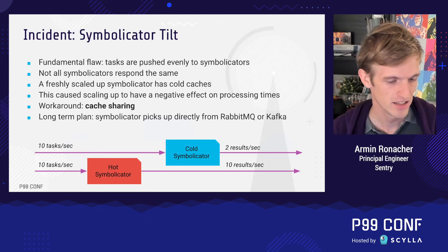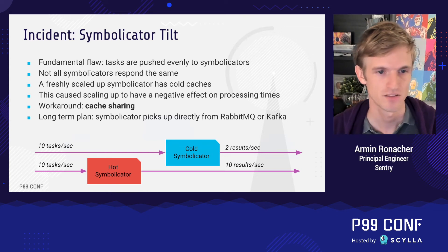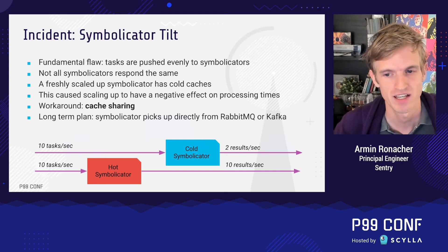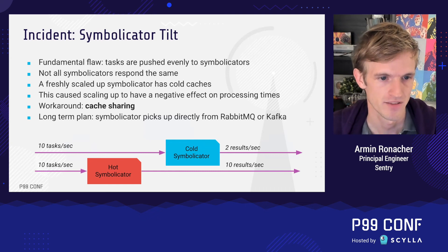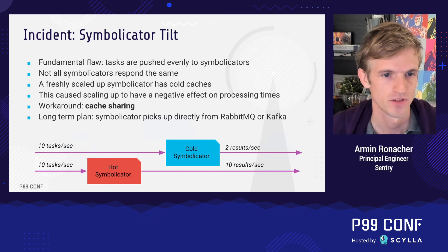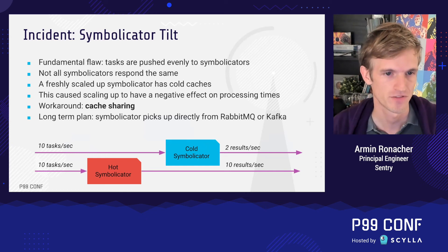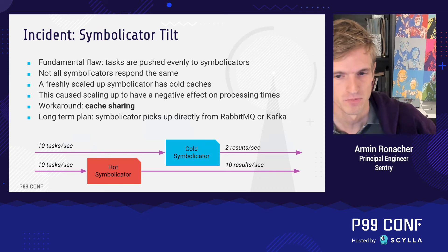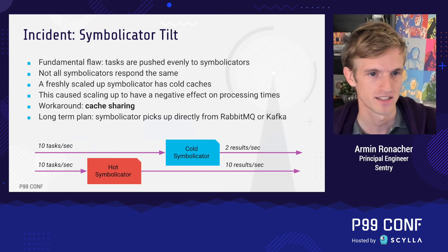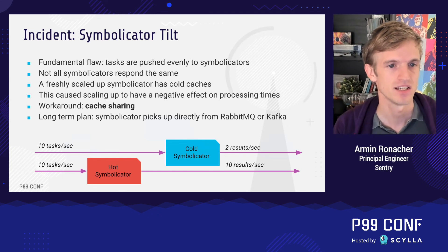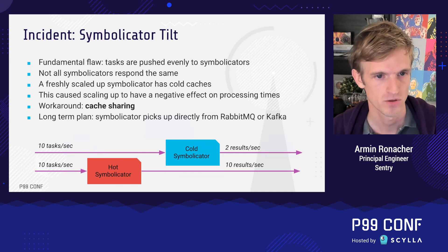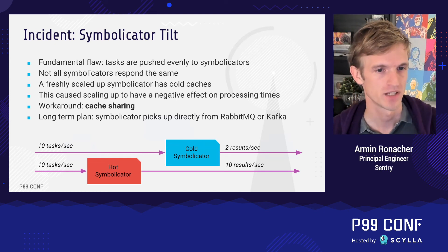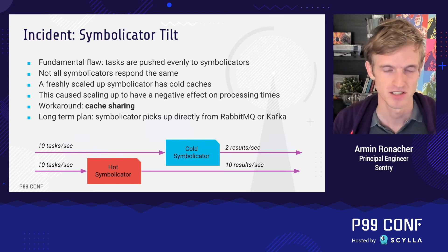An individual Symbolicator has around one terabyte of disk filled with debug information file caches. If a new symbolicator was rotated in because we needed more capacity, it would come up cold, meaning it takes much longer to process any events. A hot symbolicator with a well-stocked cache could handle 10 tasks per second and spit out 10 results per second. A cold symbolicator might receive 10 tasks but only produce two results per second. Since the load balancer doesn't know the state of each symbolicator, it would distribute evenly, causing the cold one to eventually fall over in a downward spiral.